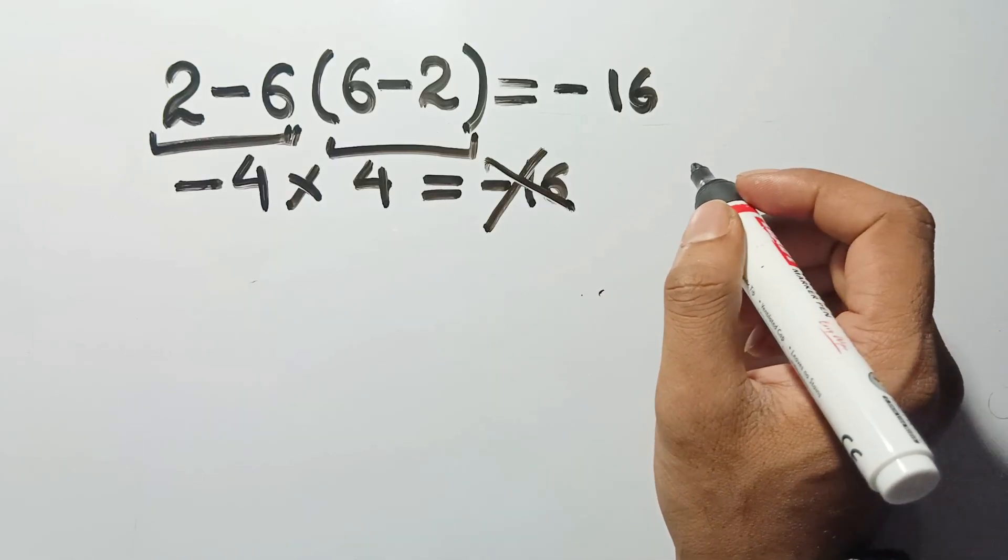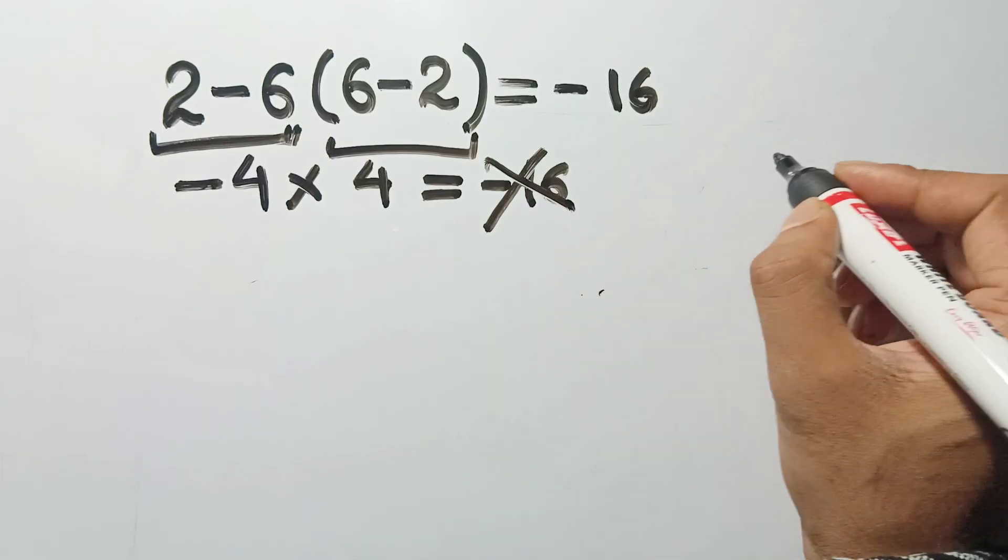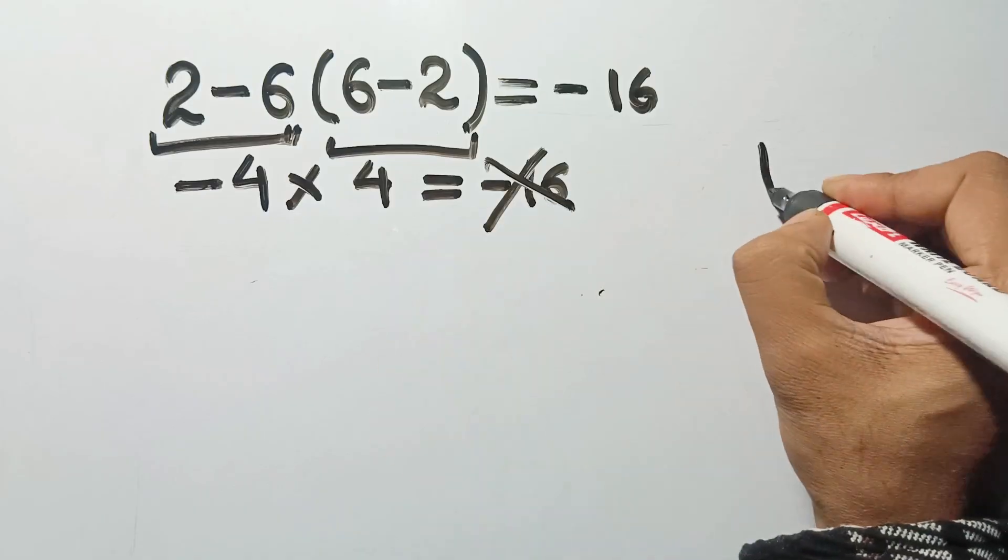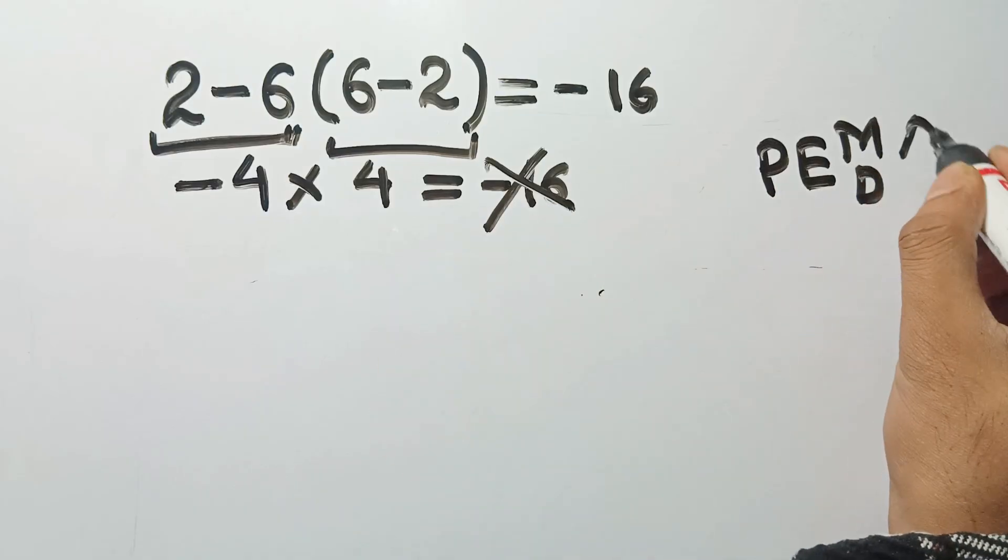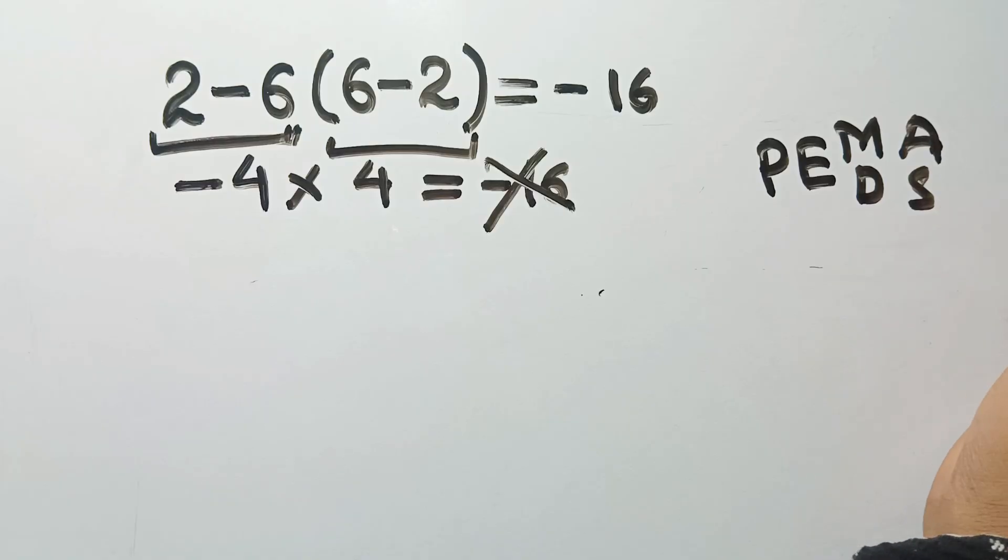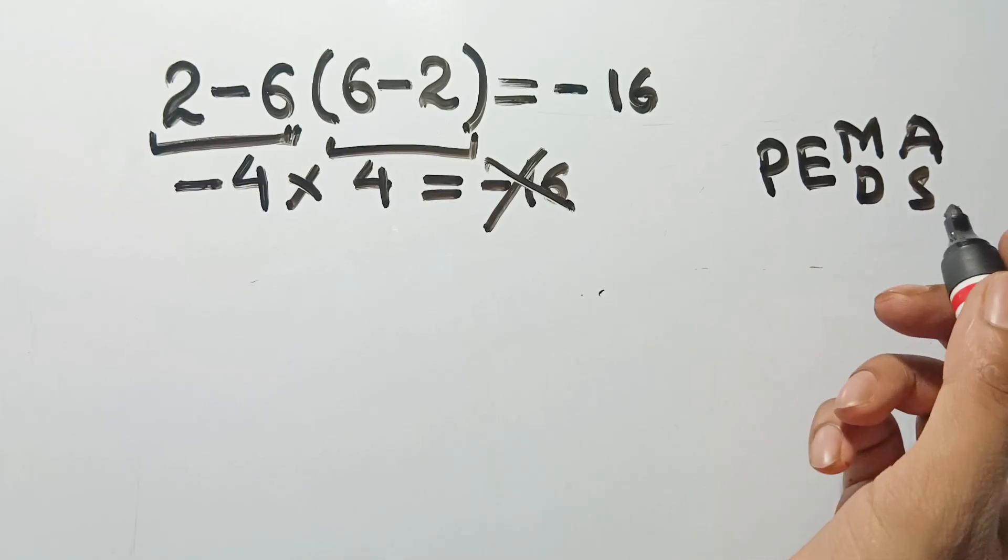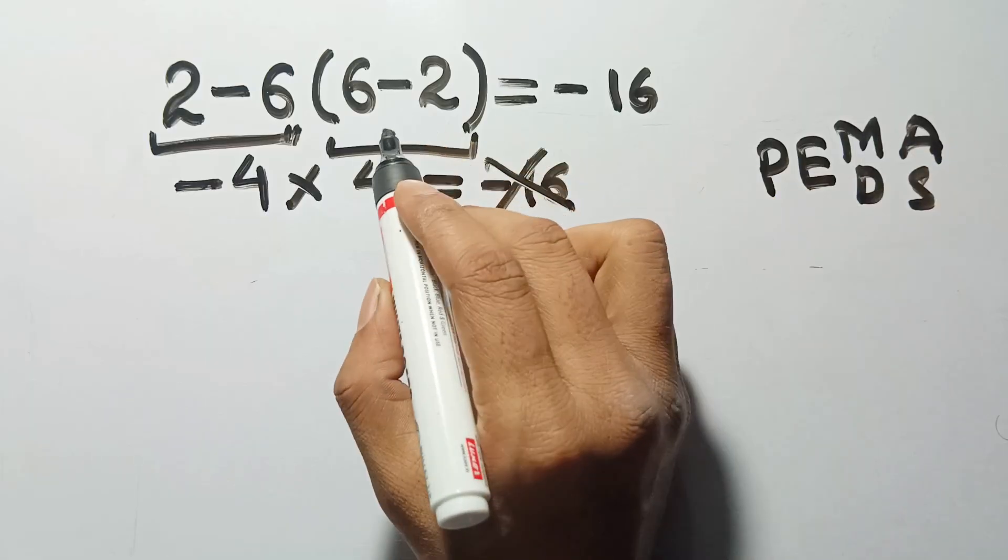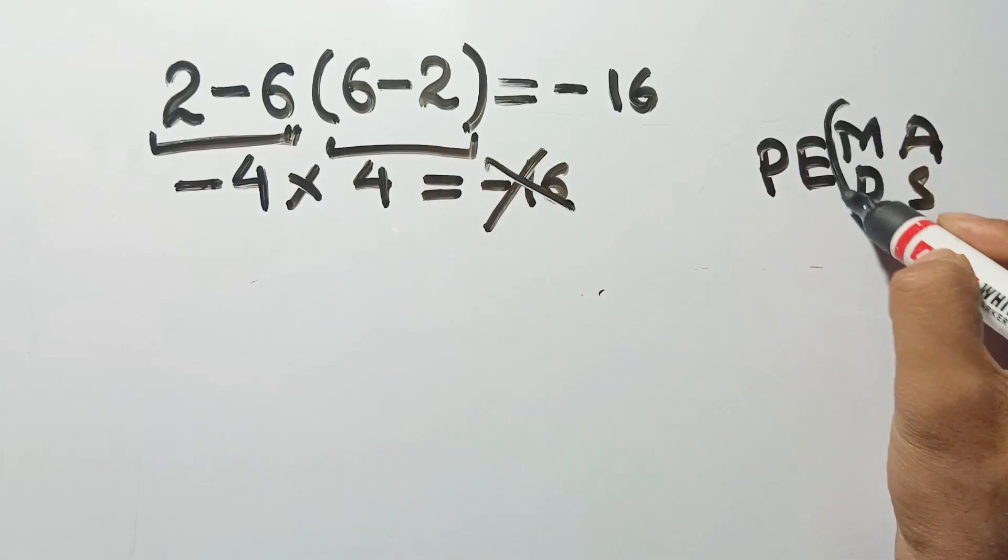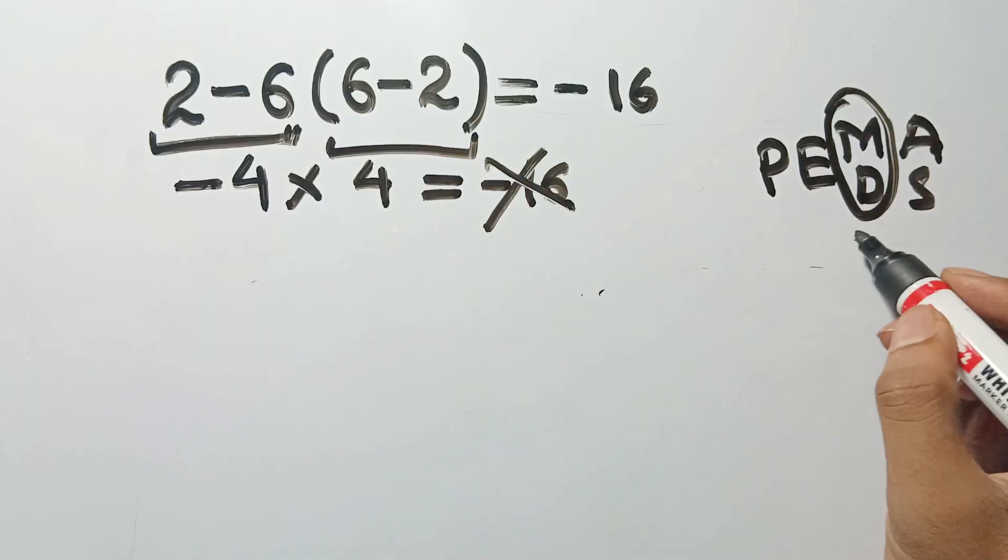Here's why this logic is misleading. The key issue is order of operations. PEMDAS: parentheses, exponents, multiplication, division, addition, subtraction, is not just a suggestion. It tells us what to calculate first. And inside PEMDAS, multiplication and division come before addition and subtraction from left to right.